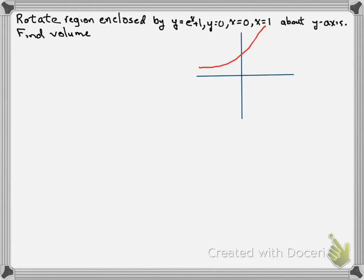This is going to be bounded by the y-axis, and also x equals 0 and x equals 1. Here's our region, and we can get rid of the piece of the graph outside that region. That region is getting rotated about the y-axis, and it's going to come this way — that's going to be our solid.